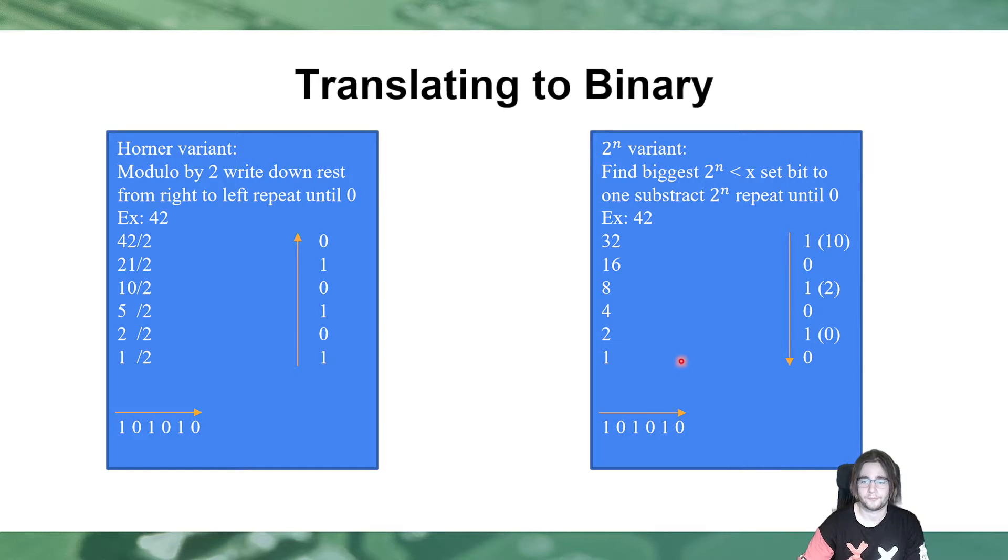And then, you can use those. What you do is, you take the biggest 2 to the power of something number that fits into your number, in this example, 42. Then, you take that bit, so every bit is according to a 2 to the power of n, digit or bit, and that bit is then 1, and then you subtract the number from your base number, and that you repeat again and again.